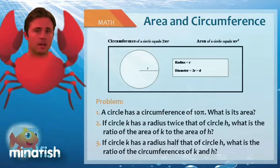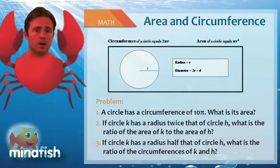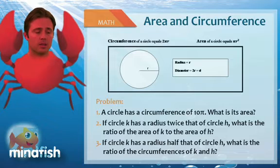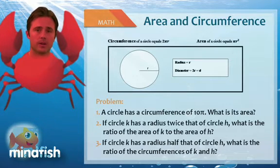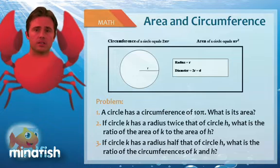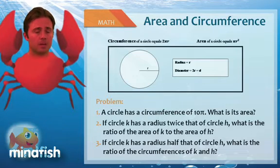Well, circle k would have an area of 4 squared pi, which would be 16π. Well, circle h would have an area of 2 squared pi, which would be 4π. So the ratio is actually 4 to 1. And that's because we're squaring the radius. So if you have a radius that's twice as big, your area will be 4 times as big.